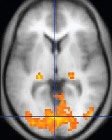Each tissue returns to its equilibrium state after excitation by the independent relaxation processes of T1 (spin-lattice), that is, magnetization in the same direction as the static magnetic field, and T2 (spin-spin), transverse to the static magnetic field. To create a T1-weighted image, magnetization is allowed to recover before measuring the MR signal by changing the repetition time. This image weighting is useful for assessing the cerebral cortex, identifying fatty tissue, characterizing focal liver lesions and in general for obtaining morphological information, as well as for post-contrast imaging.